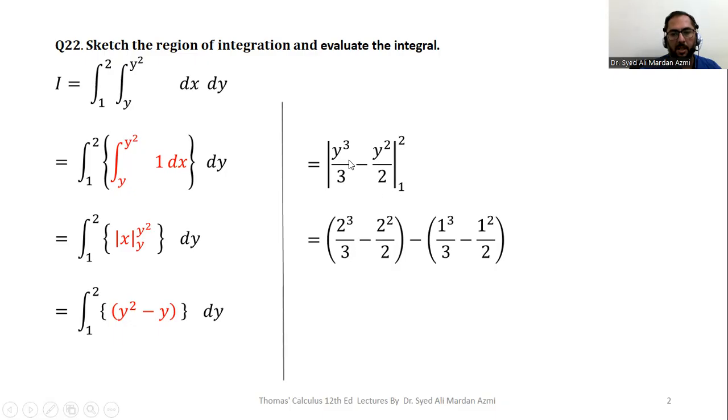In the next step, we have applied the limits as upper limit minus lower limit. For the upper limit, we have replaced y with 2 and then minus, and then for the lower limit, we will replace y with 1. After simple calculation, you will get 5 over 6. This concludes the first part where we have evaluated the integral.